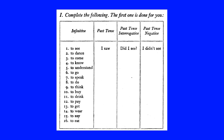Exercise 1: complete the following — the first one is done for you. Infinitive, past tense, past tense interrogative, past tense negative. To see: I saw, did I see, I didn't see. To dance, to come, to know, to understand, to go, to speak, to do, to think, to buy, to drink, to pay, to get, to wear, to say, to cut.